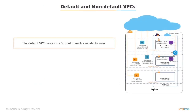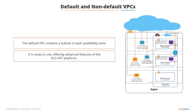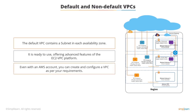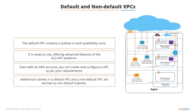In each availability zone, the default VPC contains a subnet. It is ready to use and offers the advanced features of the EC2 VPC platform. When you do not mention a subnet despite having a default VPC, the Amazon EC2 instance launches into your default VPC. Despite having an AWS account that supports only the EC2 VPC platform, you can create and configure a VPC as per your requirements. The additional subnets in the default VPC and subnets in a non-default VPC are termed as non-default subnets.